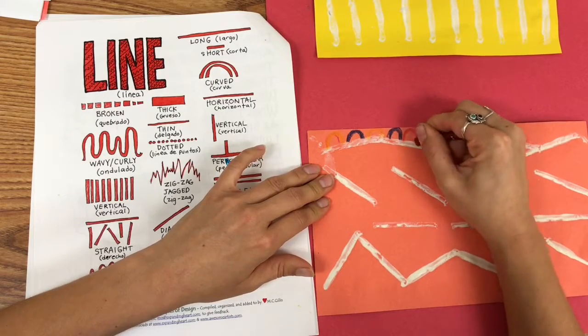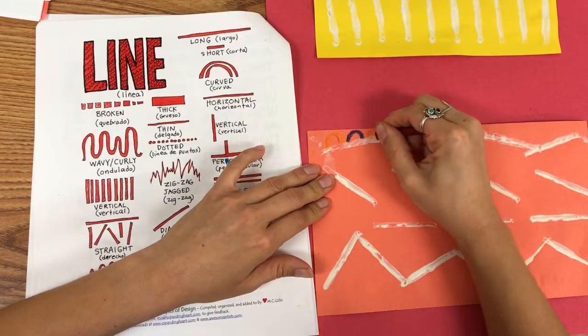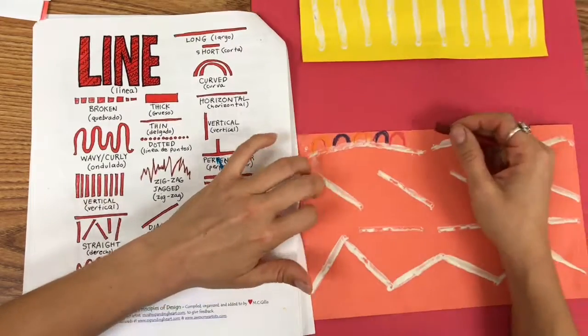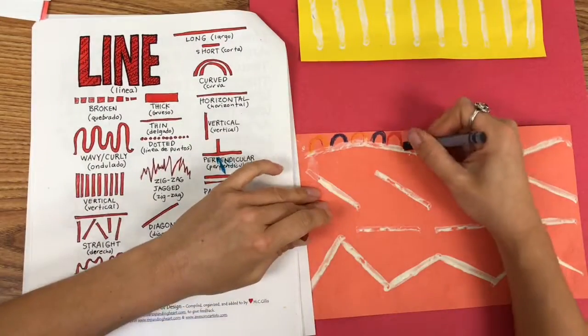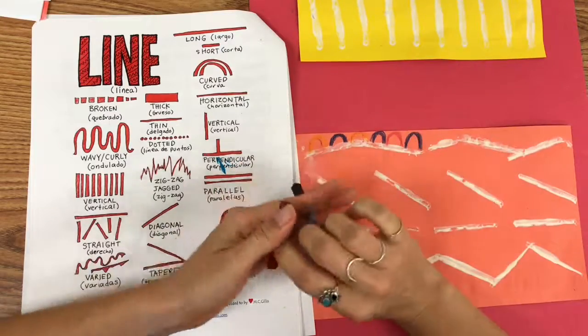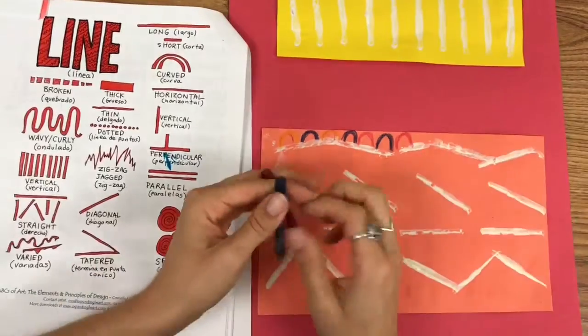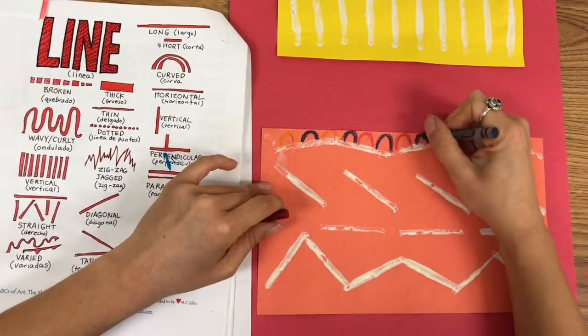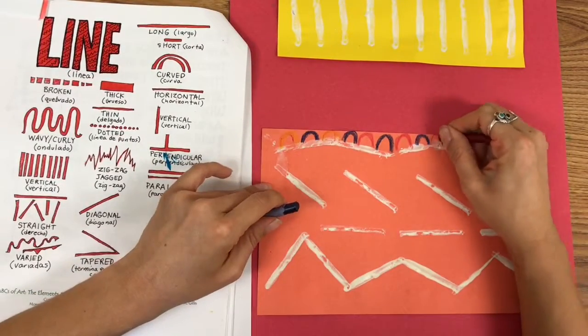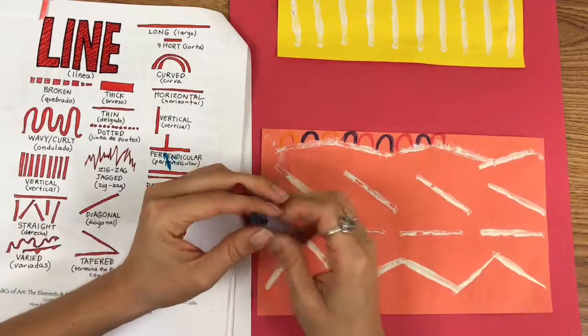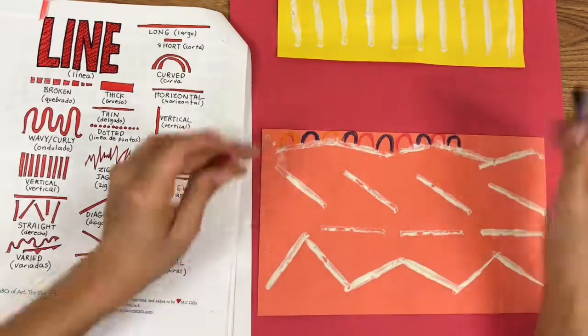Change my pattern up and do blue, red, blue, red. That way the audience can see my pattern. Blue, red, blue, red. Curved lines sort of look like rainbows. You can do a lot of things with curved lines.